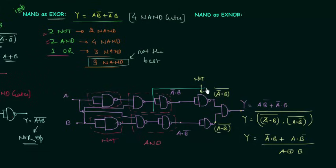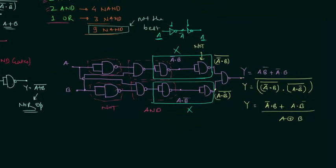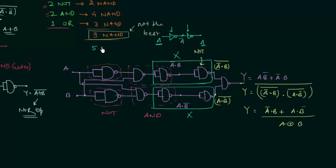We are using NOT gates such that if A is the input, after two NOT gates we get A again — the same function. So there is no need to use those four NAND gates. We can eliminate them from the circuit and still have the output equal to A complement and B or A and B complement. This reduces us from 9 to five NAND gates.